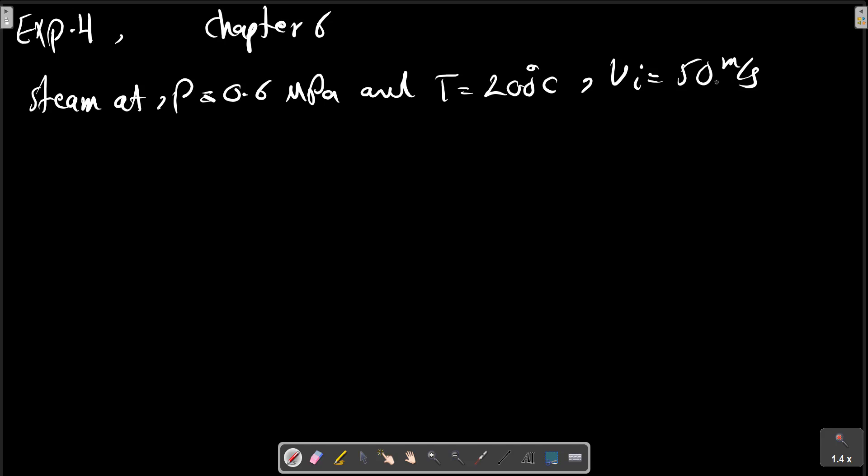Example 4, Chapter 6, Fundamentals of Thermodynamics. Steam at P = 0.6 MPa and T = 200°C enters an industrial nozzle with a velocity of 50 m/s. It leaves at a pressure of P = 0.15 MPa.